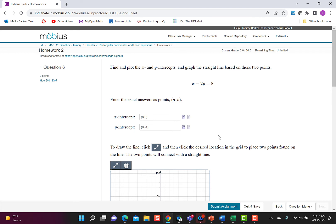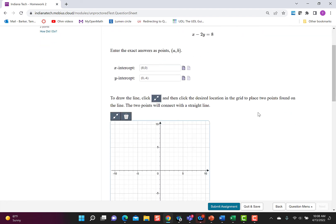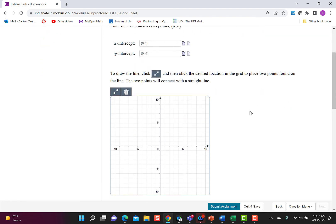So ahead of time I went ahead and solved this x minus 2y is 8 and found out the x intercept is 8, 0 and the y intercept is 0, negative 4. So I'm going to come down to the graph and I'm going to use those two points, so 8, 0 and 0, negative 4.